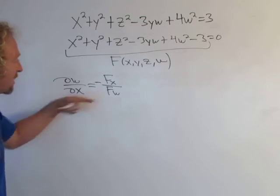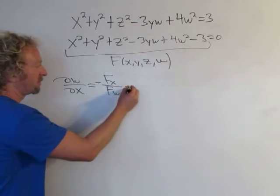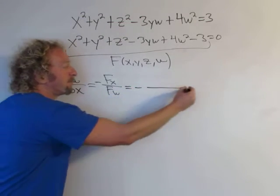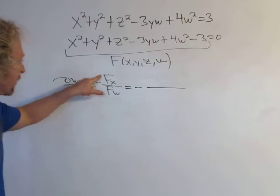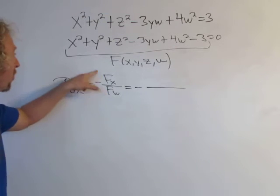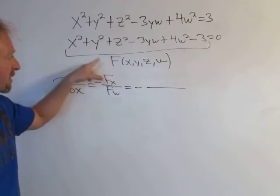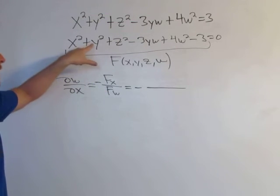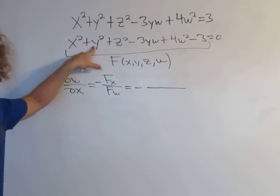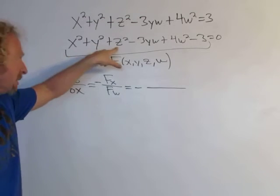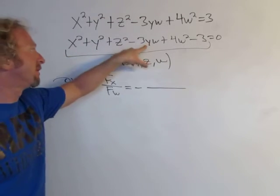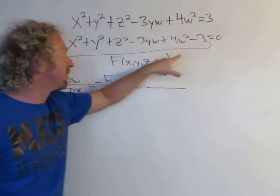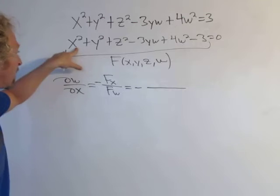Now we just have to take these partial derivatives. We have the minus sign here. The partial of big F with respect to x — we're going to hold everything constant except x. So x squared, y squared, z squared, the yw term, the w squared term, and the constant are all zero except 2x. So all we have is 2x.